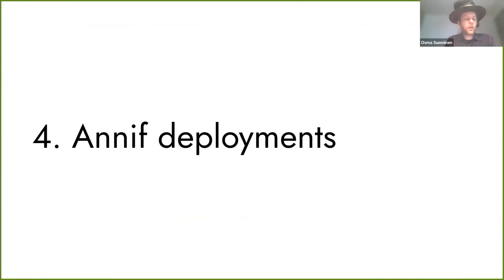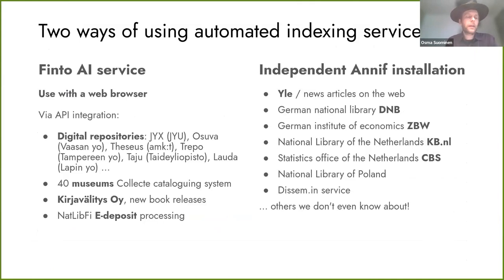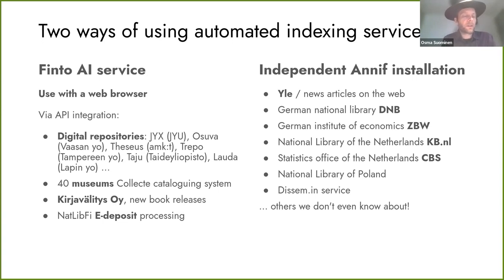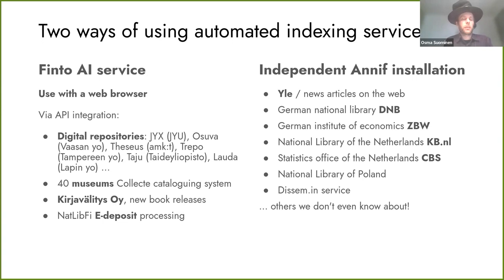ANIF has been deployed in two quite different ways. The first category consists of institutions, mainly in Finland, who use automated subject indexing services provided by us — specifically the Finto AI service. They don't have to install ANIF themselves; they just use API services or systems where ANIF-based functionality has been implemented. The second category is institutions who have set up their own independent ANIF installations and make use of it as an open source software package.